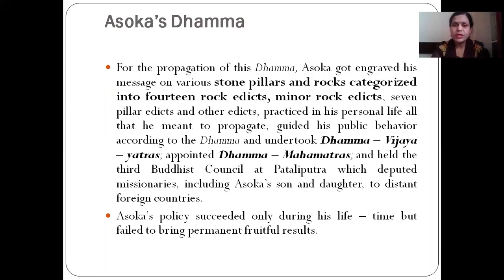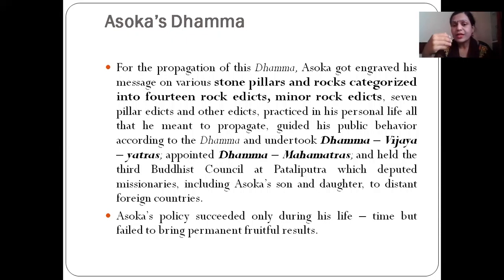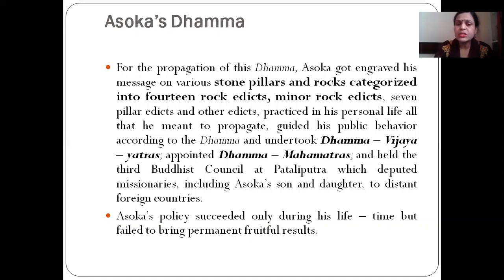For the propagation of this dharma, Ashoka got engraved his message on various stone pillars and rocks, categorized into 14 rock edicts, minor rock edicts, seven pillar edicts, and other edicts practiced in his personal life. He guided his public behavior according to dhamma, undertook dhamma vijayatras, appointed dhamma mahamatras who propagated dhamma all over India and abroad, and held the third Buddhist council at Pataliputra, which deputed missionaries including Ashoka's son and daughter to distant foreign countries. Ashoka's policy succeeded only during his lifetime but failed to bring permanent fruitful results.